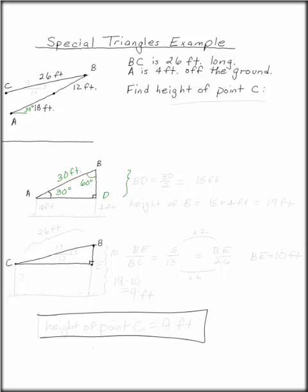The height BD is going to be half of 30. BD is 15 feet. So the height off the ground of B is 15 plus 4 feet, or 19 feet, because if A is 4 feet off the ground, then so is D. Drawing some grass.